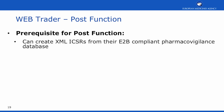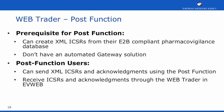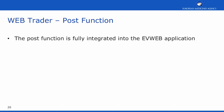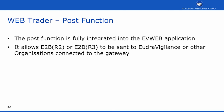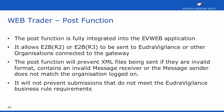The pre-requisite for EVPOST function users is that they can create XML ICSRs from their E2B-compliant pharmacovigilance database but do not have an automated gateway solution. EVPOST function users can send these XML ICSRs and acknowledgements using the post function built into EVWeb, and can receive ICSRs and acknowledgements back through the WebTrader in EVWeb. The post function will prevent XML files from being sent if they are invalid or if the message receiver or sender ID does not match the organisation currently logged on. It will not, however, prevent submissions that do not meet EudraVigilance's business rules.